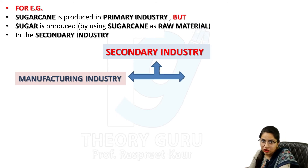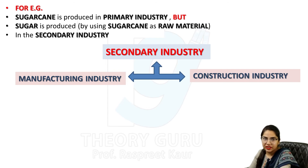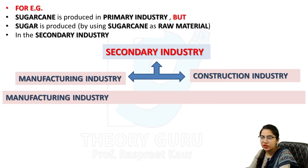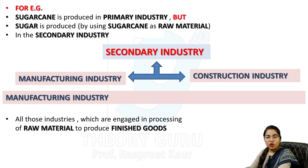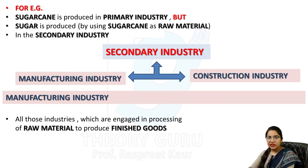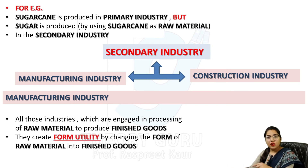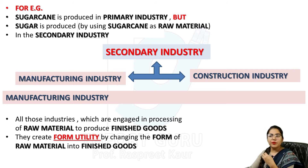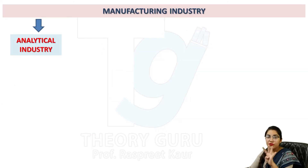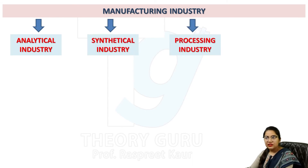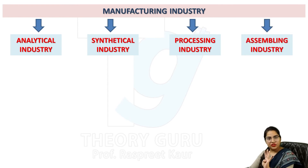Secondary industry is of two types: manufacturing industry and construction industry. In manufacturing industry, all industries engaged in processing raw material to produce finished goods create form utility by changing the form of raw material into finished goods — converting raw material into a form that is acceptable, satisfying, and fit for use. Manufacturing industries are of four types: analytical, synthetical, processing, and assembling. In analytical industry, the basic raw material is analyzed and separated into different finished products. For example, crude oil is the raw material, and after processing it is converted into kerosene, petrol, and diesel — so one single raw material creates multiple different finished products.